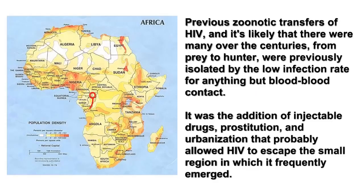Previous zoonotic transfers of HIV — and it's likely that there were many over the centuries, from prey to hunter — were previously isolated by the low infection rate from anything but blood-to-blood contact. It was the addition of injectable drugs, prostitution, and urbanization that probably allowed HIV to escape the small region in which it frequently emerged.